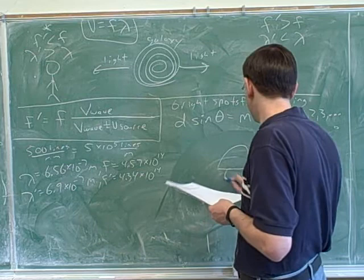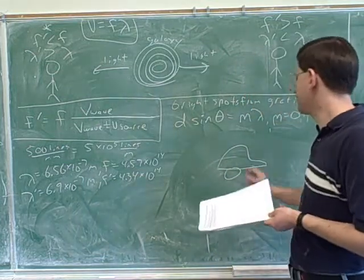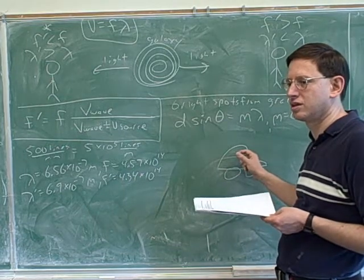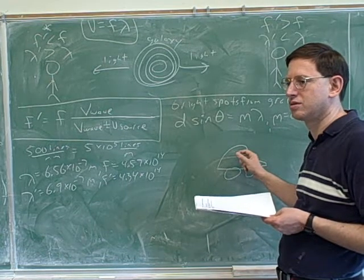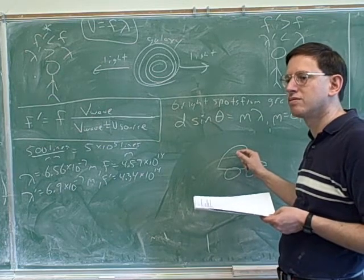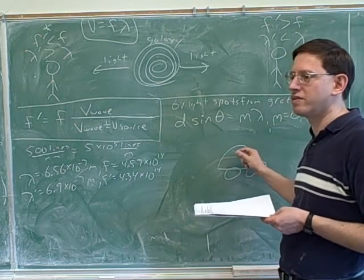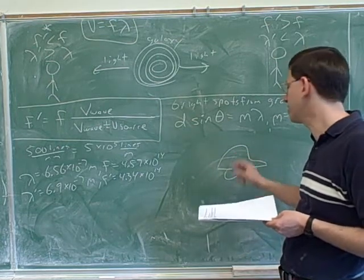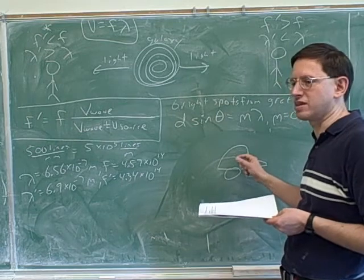Let's go back to the car example to make sure we understand that. Remember, there was a siren here. So what would V wave stand for for the car and the siren? The speed of the wave of the siren. What is the wave here? What type of wave is it? A sound wave? Yeah, the V wave would be the speed of the sound wave.